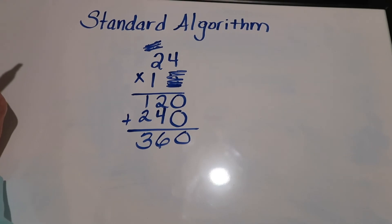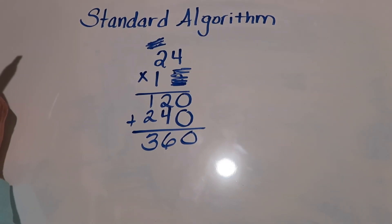Add those 2 together and we get 360. So our product, once again, is 360. And those are the 3 strategies, but remember, you need to practice those math facts. See you soon. Bye.